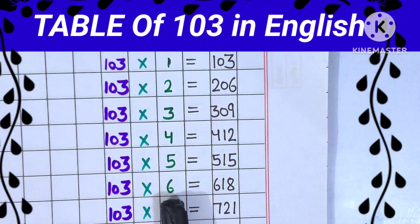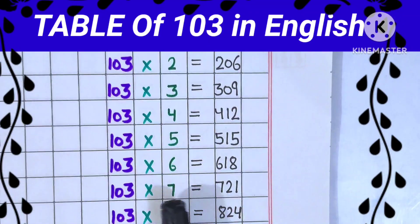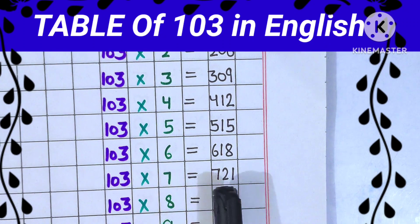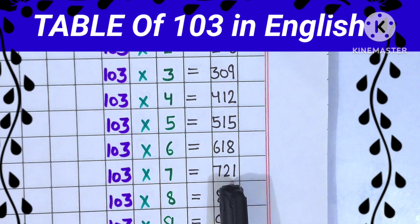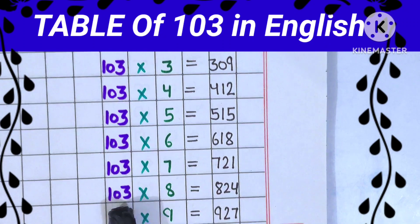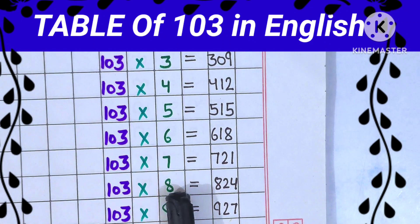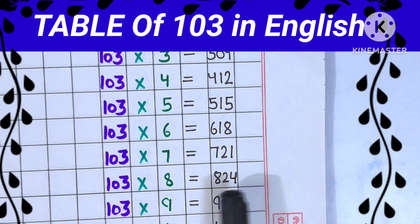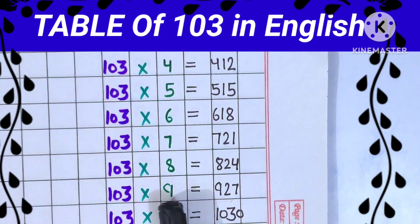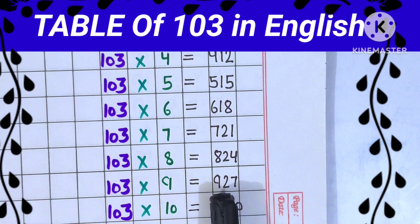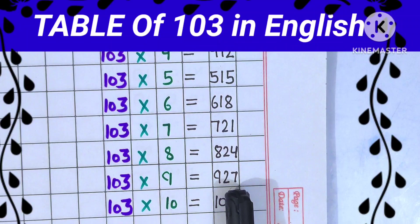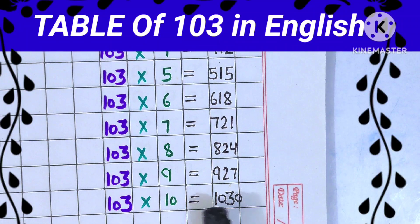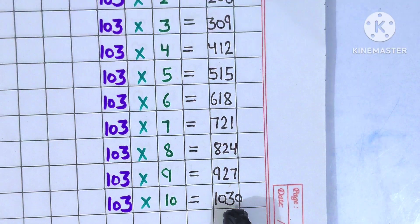103 sixes are 618. 103 sevens are 721. 103 eights are 824. 103 nines are 927. 103 tens are 1030.